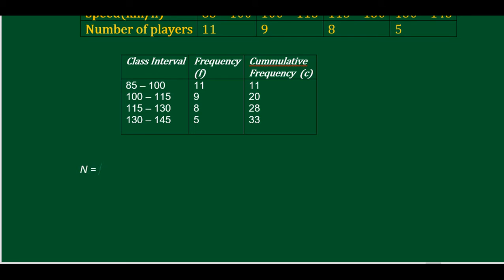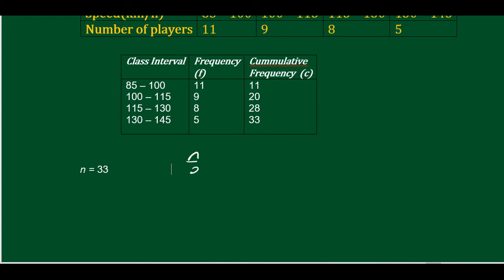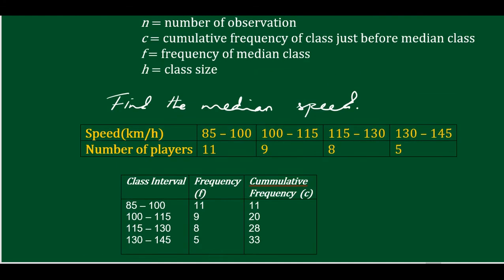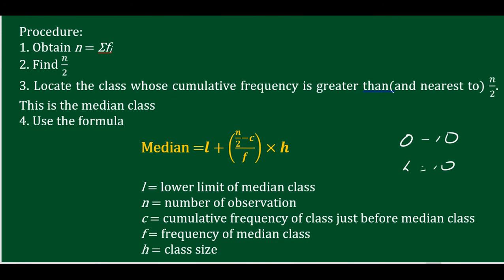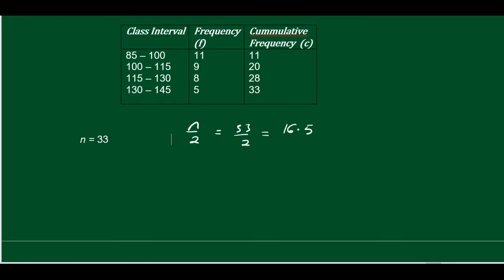N equals 33. So N by 2 is 33 by 2, which gives us 16.5. Locate the class whose cumulative frequency is greater than and nearest to N/2. The cumulative frequencies are 11 and 23. Since 16.5 is less than 23, we check 23 — this is the median class.